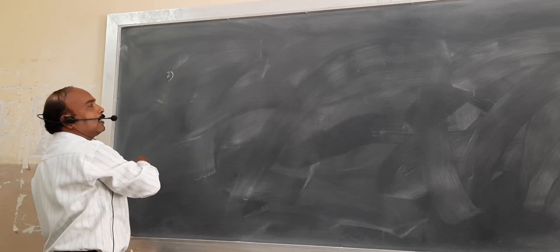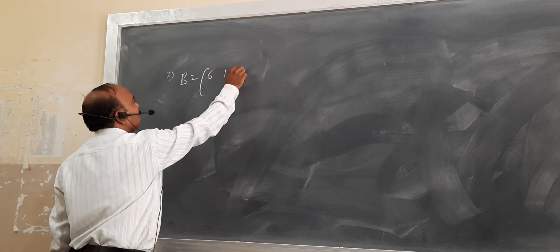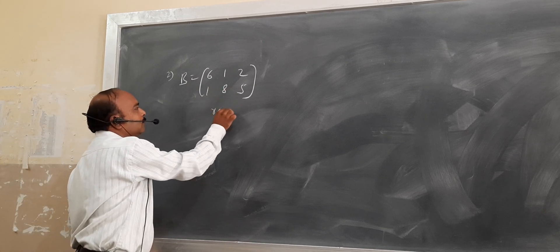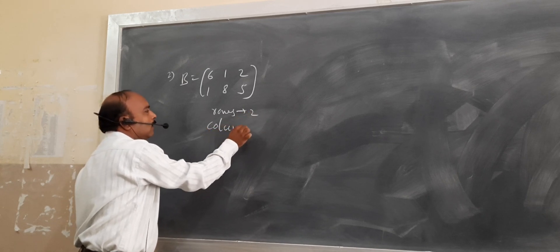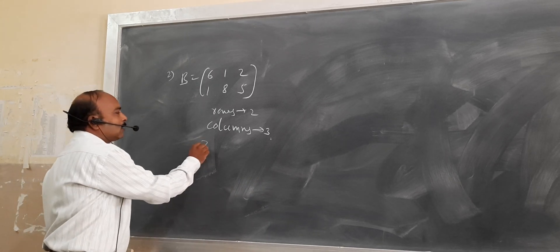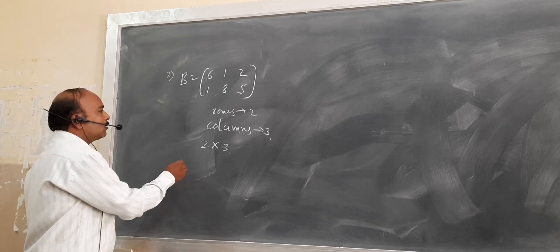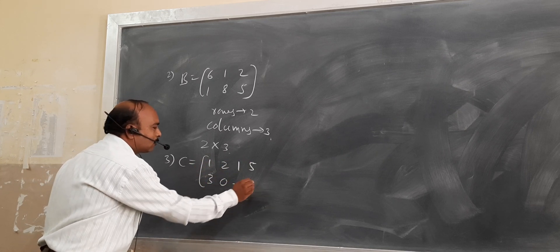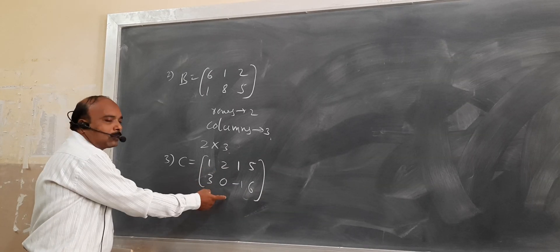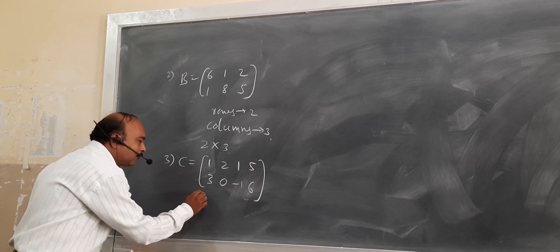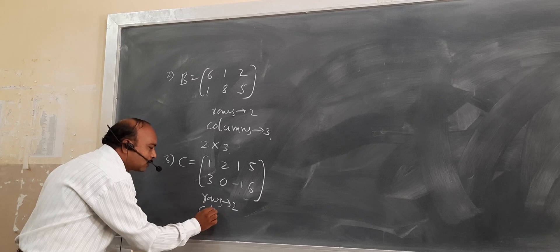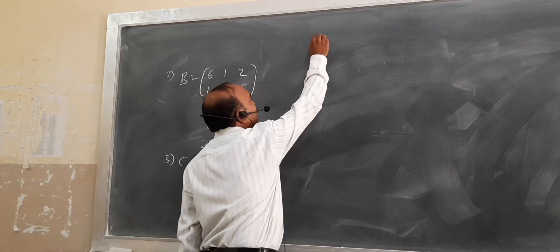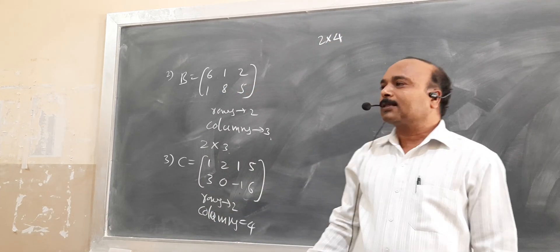Next example: B equal to [6, 1, 2; 1, 8, 5] is a matrix of 2 rows and 3 columns. Here rows are 2 and columns are 3, so it is called the matrix of order 2 by 3. Next example: C equal to [1, 2, 1, 5; 3, 0, -1, 6]. This matrix has 2 rows and 4 columns, so rows equal to 2 and columns equal to 4. Therefore it is called the matrix of order 2 by 4. Like that we decide the order of any matrix.